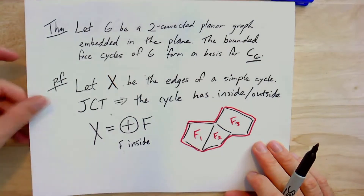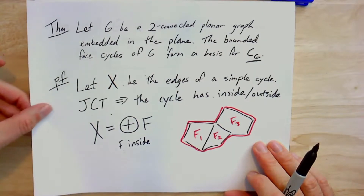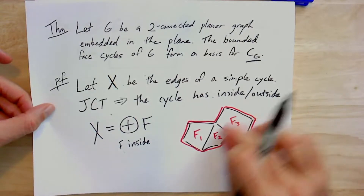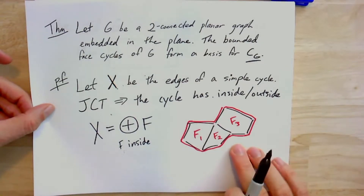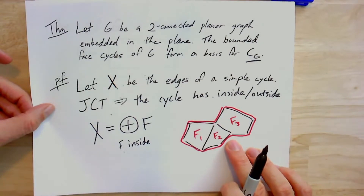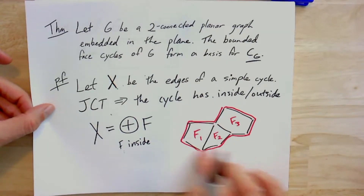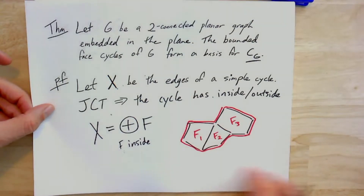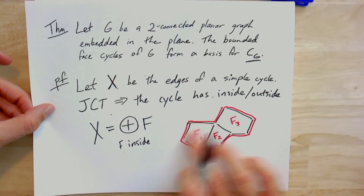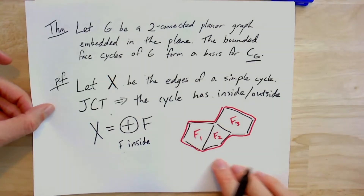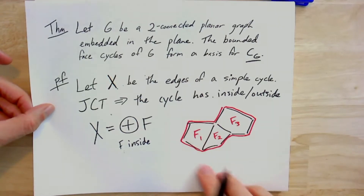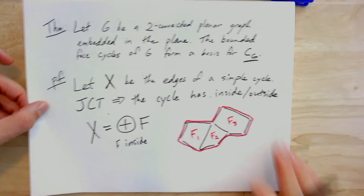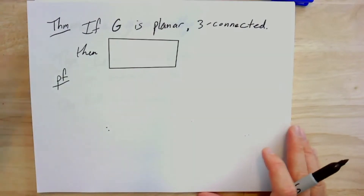So that's our first step: with the embedding and the face cycles, we can use the Jordan curve theorem to write larger cycles as sums of the edges in the cycles that bound the faces.